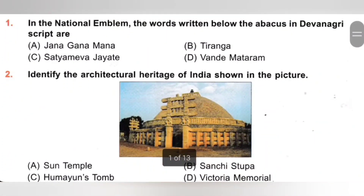First one. In the National Emblem, the words written below the abacus in Devanagari script are: A. Janaganamana, B. Tiranga, C. Satyamev Jayate, D. Vande Mataram. The National Emblem is the seal of the Government of India. It has four lions. The base of the emblem has a horse and a bull with a wheel between them. The words Satyamev Jayate are written below the abacus. So, option C is the correct answer.